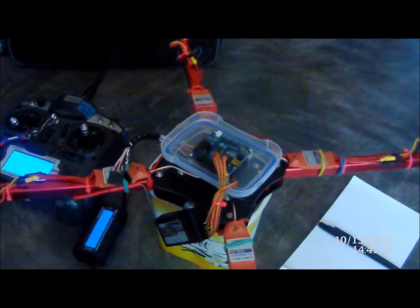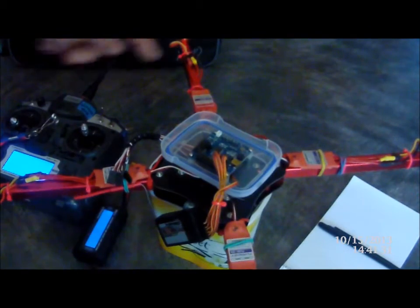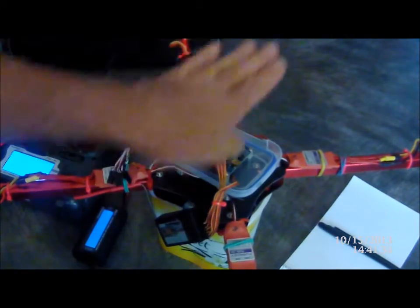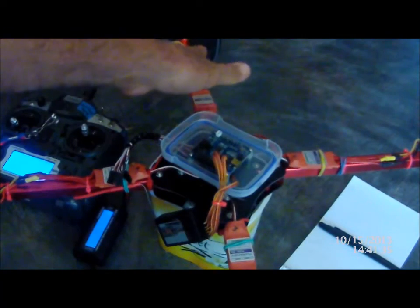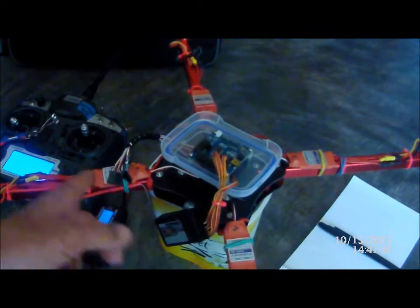And these are Turnigy Plush. These are all numbered one, two, three, four. So that's forward, front left, front right, rear right, rear left.